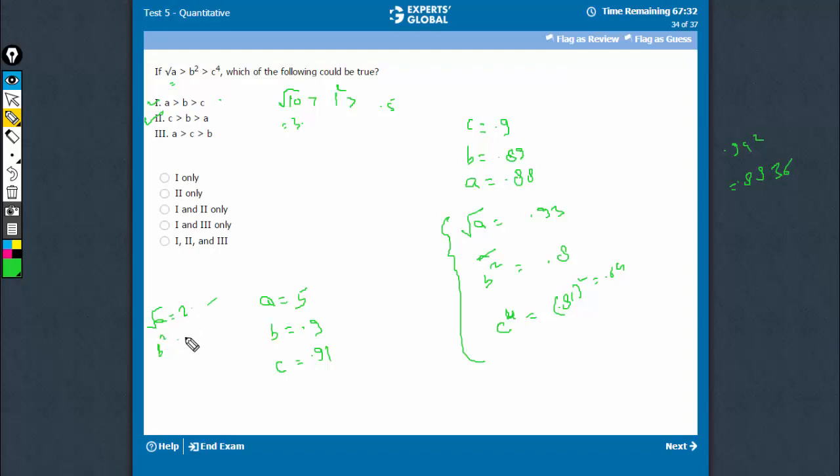B square would be 0.81 and C raised to power 4 would be, again, same thing, something similar here. It would be between 0.6 and 0.7. 0.91 square would be 0.8281. Let's say 0.8 something and 0.8 square would be 0.64, 0.65.